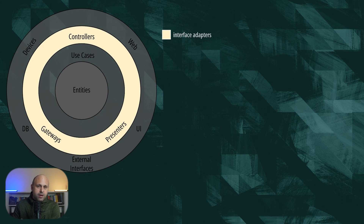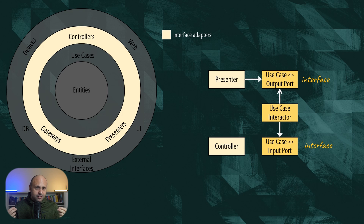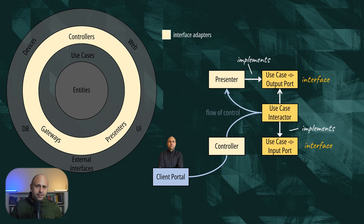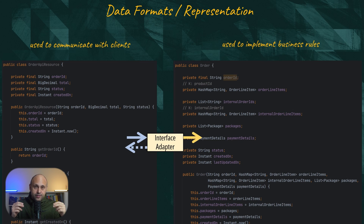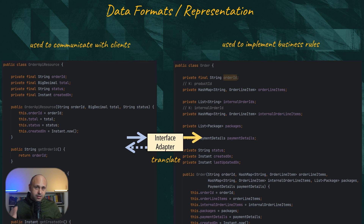The next layer is where we place the interface adapters — classes that mediate the interaction between the UI or external systems with our application core. This is a very interesting layer with no real business logic. The main objective of this layer is to translate data formats. For instance, our API can represent the order as a simple resource, but our business model could be using a very different and complex data structure. We don't want the two things to be coupled, so each layer uses its own data format and the interface adapter performs the translation.